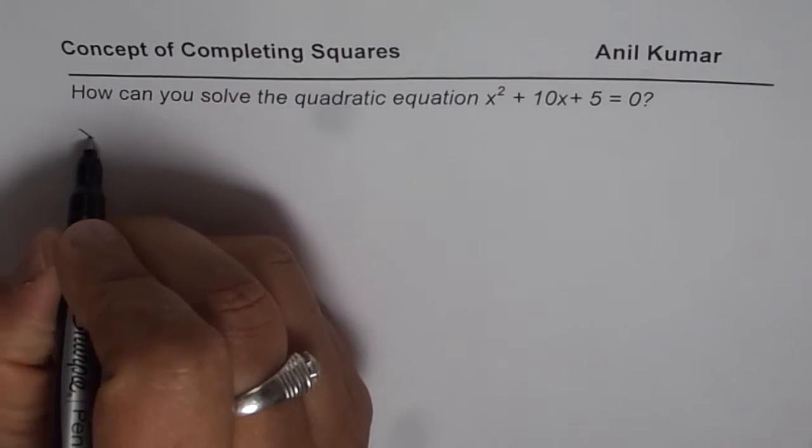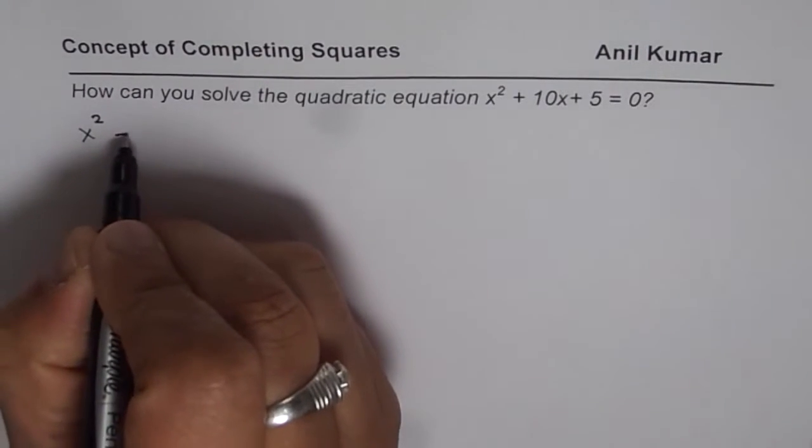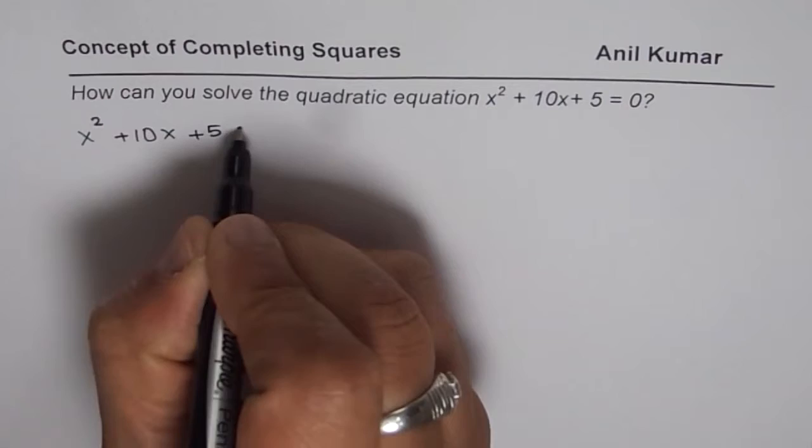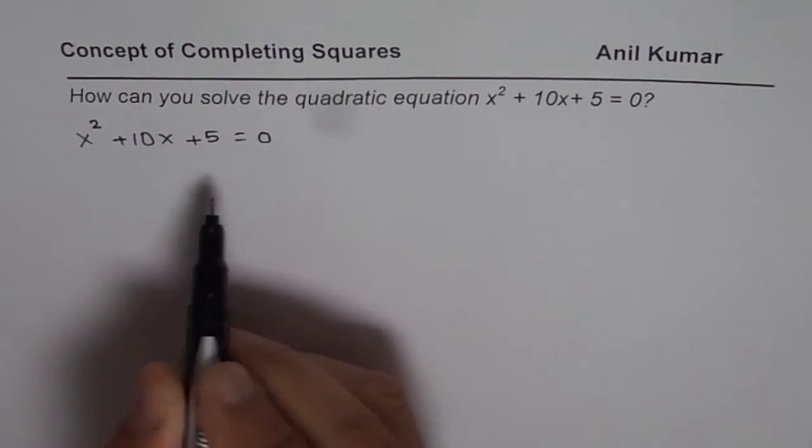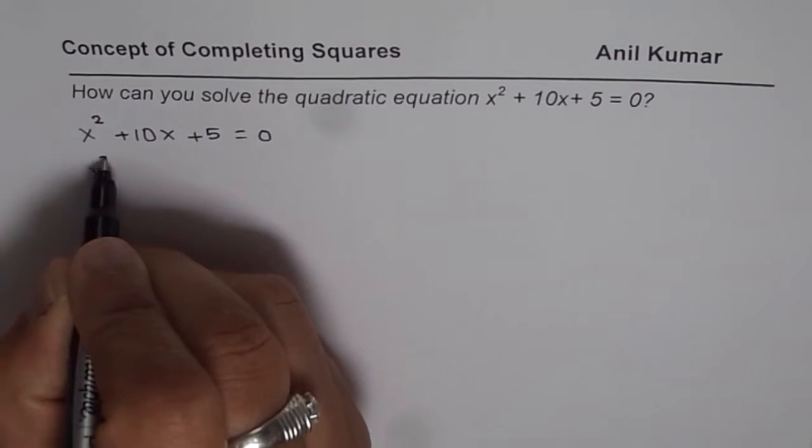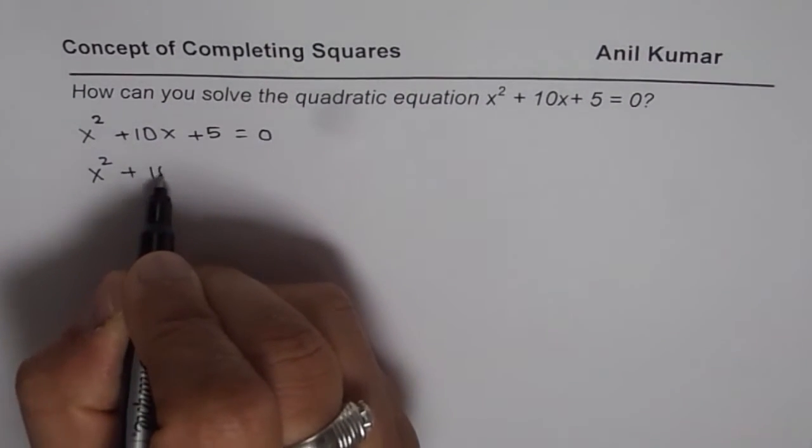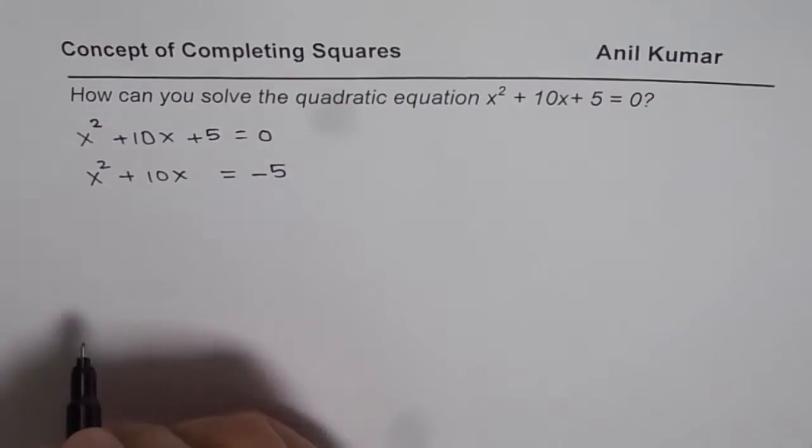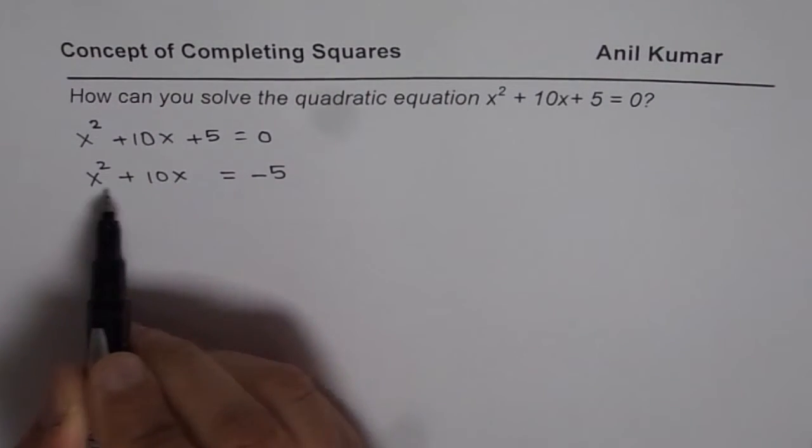Initially when you start solving such an equation, we write x² + 10x + 5 = 0. Then we keep the variables on the left side, so we have x² + 10x = -5.